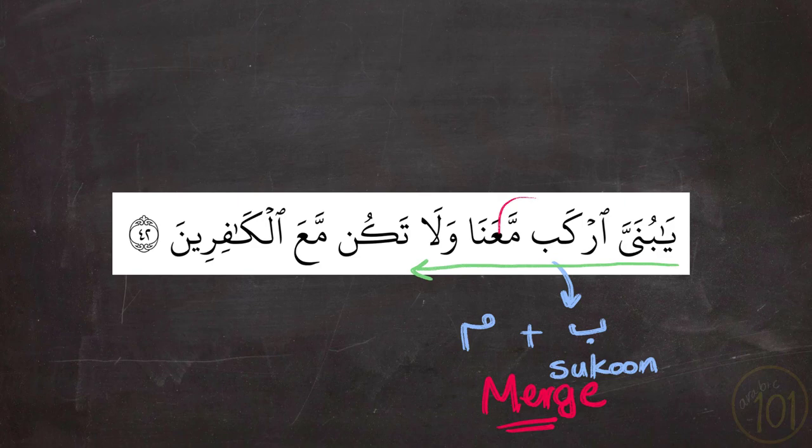And it will sound like this: يَا بُنَي يَرْكَمْ مَعْنَا وَلَا تَكُمْ مَعَ الْكَافِرِينَ. So the Ba' completely disappeared or was completely merged with the Meem that followed it. So we said إِرْكَمْ مَعْنَا, and we cannot say يَا بُنَي يَرْكَمْ مَعْنَا. That is not the correct pronunciation.